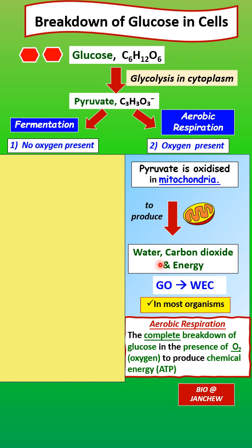The mitochondria produces the final products of water, carbon dioxide, and energy. The general equation for aerobic respiration can be remembered with 'GOWHACK': G for glucose, O for oxygen — these are the substrates — and the products are W for water, E for energy, and C for carbon dioxide. Aerobic respiration can be defined as the complete breakdown of glucose into water and carbon dioxide in the presence of oxygen to produce chemical energy.